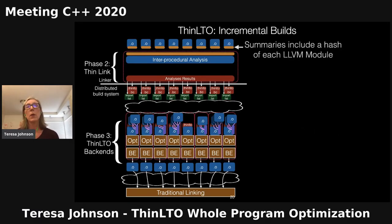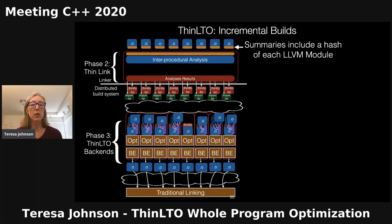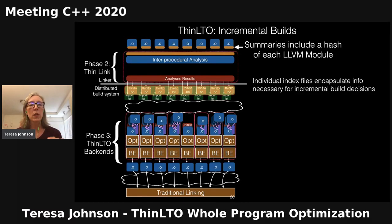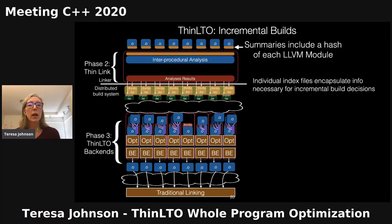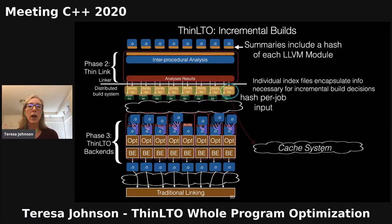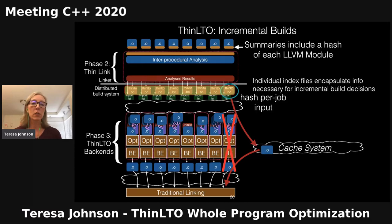For incremental builds, the summaries contain a hash of each module's IR. If we change a single source file, we rebuild it to a new IR object with a new summary and redo the thin link — which is fast. The analysis results file contains not only the analysis results and transformations, but also the hash of the module and any modules we'll be importing from. This encapsulates all the information needed to make an incremental build decision. We compute a hash of that file, look it up in our cache system, and if there's a matching entry, we use the cached native object and completely suppress the corresponding LTO backend.